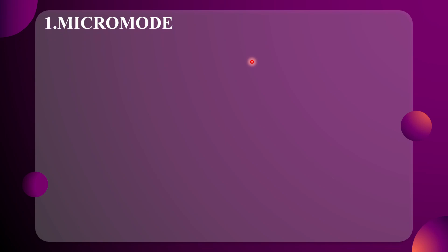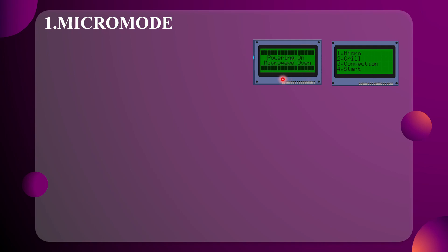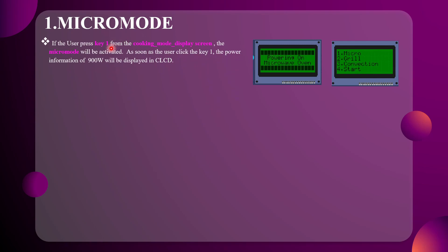Let's go on to the Micro mode. Initially, we will be displaying a power-on screen, then it enters into the cooking mode display screen. If the user presses key 1 on the matrix keypad from the cooking mode display screen, the Micro mode will be activated.